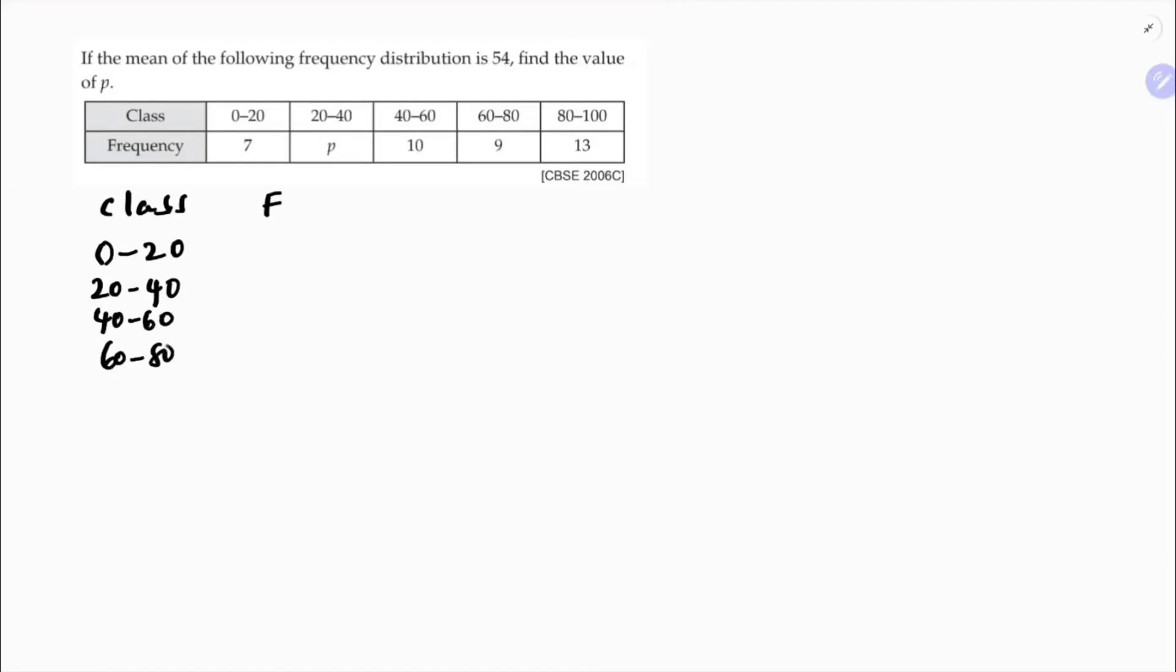40 to 60, 60 to 80 and 80 to 100. And the frequency is 7, p, 10, 9 and 13. So for calculating median, we need to find class marks, compulsory we need to find class marks xi. Before class marks, better it will write h value.